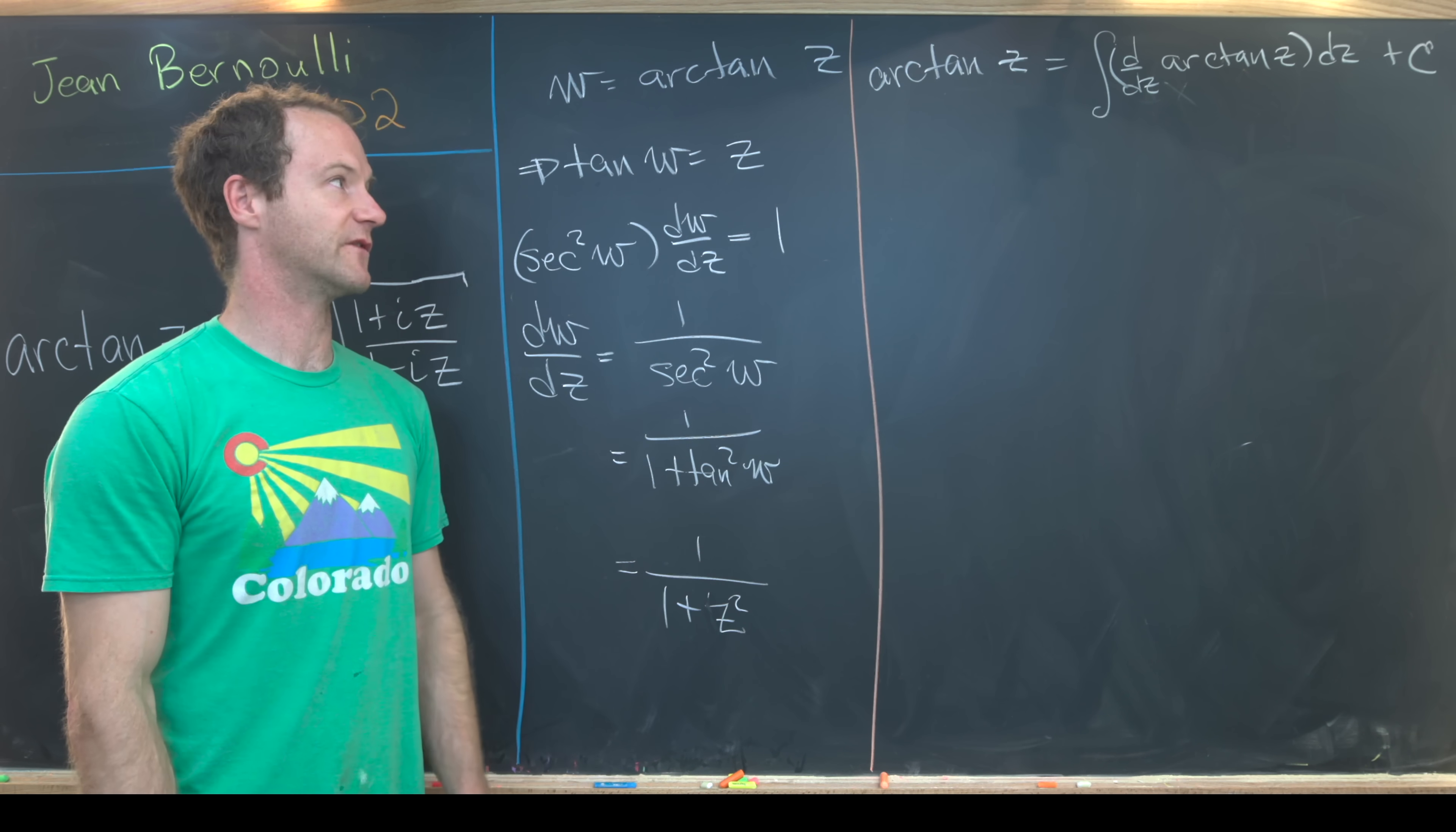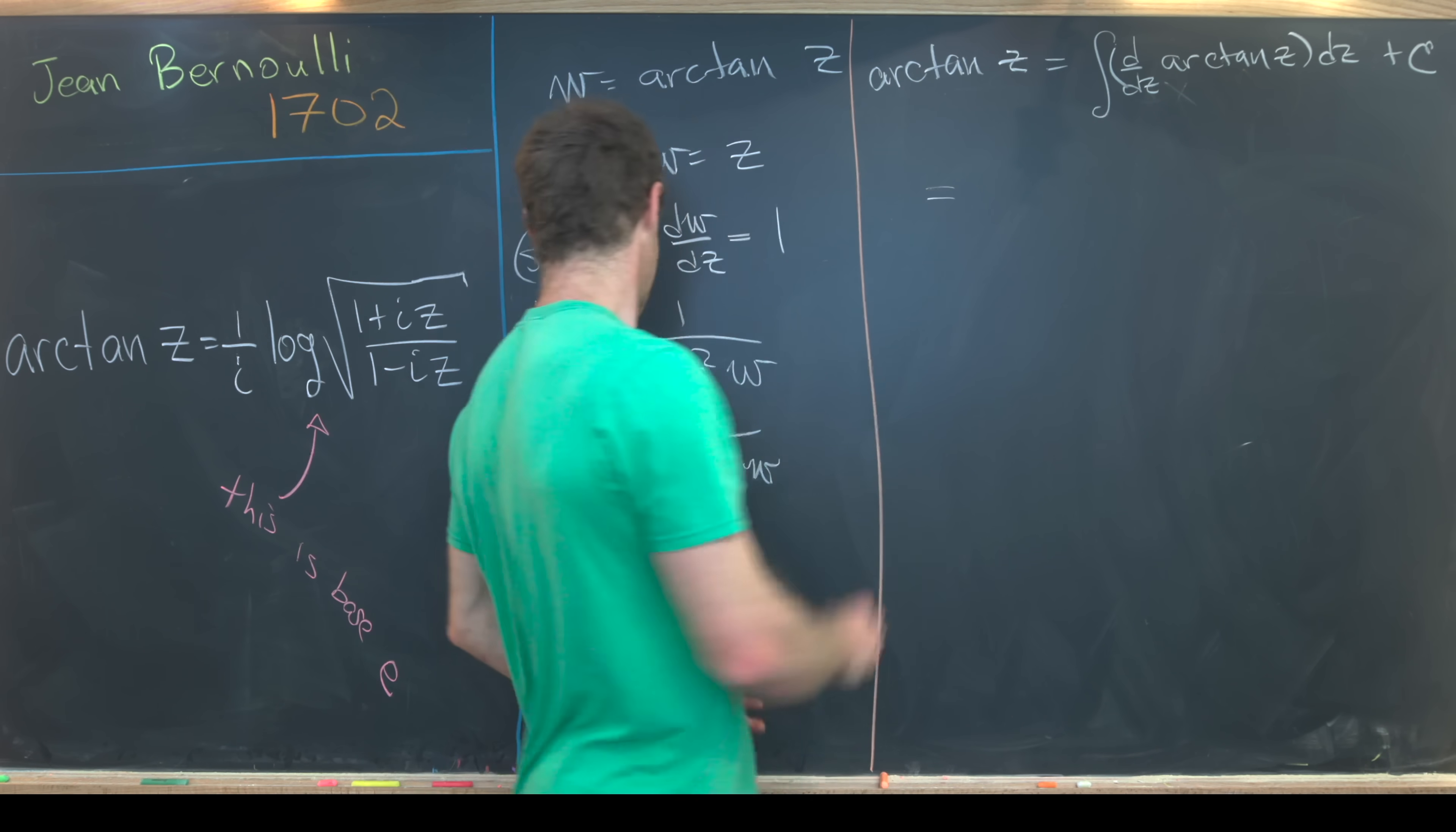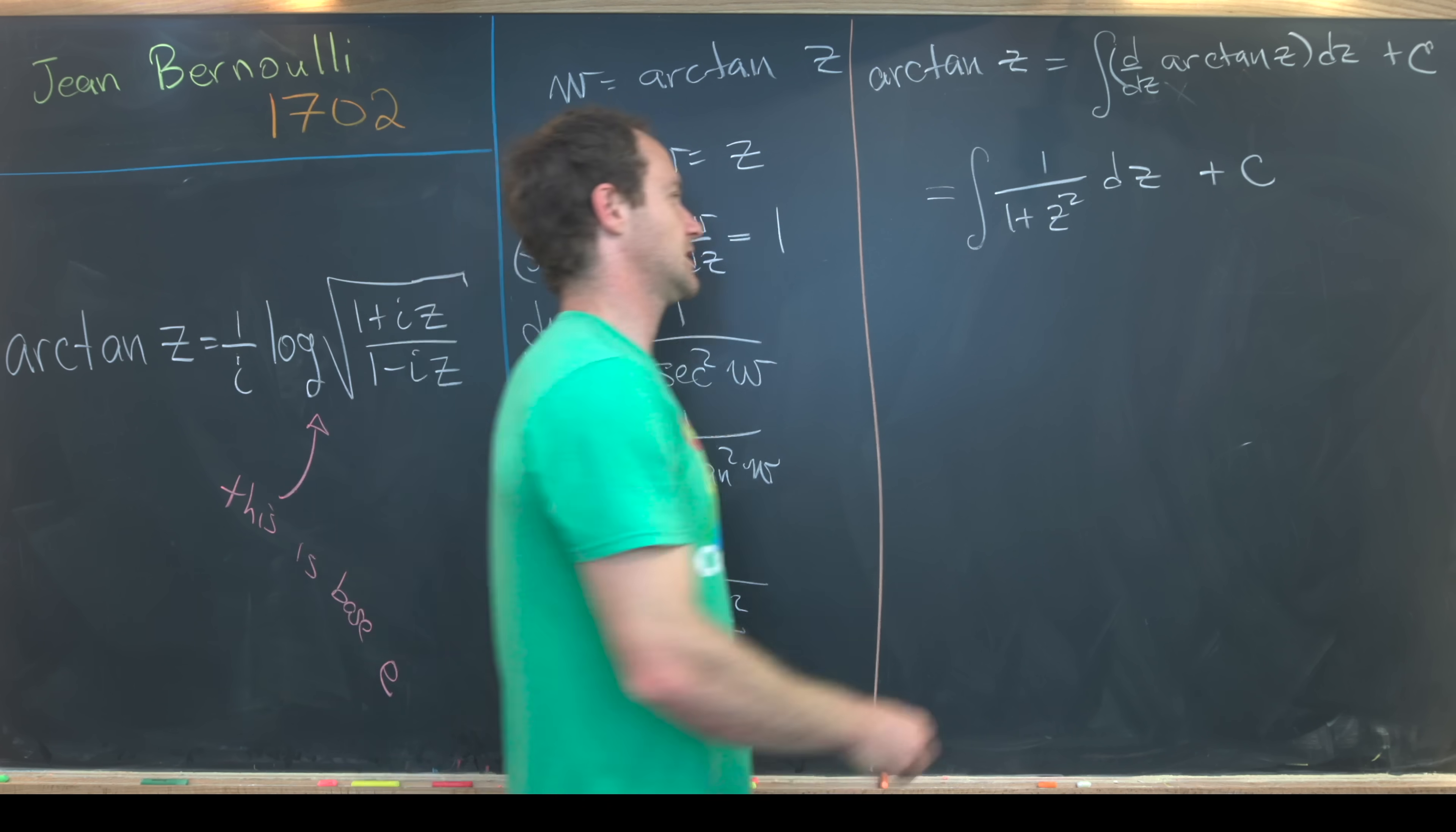This is a result of the fundamental theorem of calculus. Using this, we see that is the antiderivative of one over one plus z squared dz, and then we've still got this plus a constant.